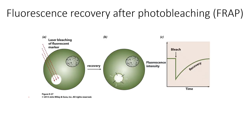The fluorescence technique we're going to discuss first is called fluorescence recovery after photobleaching, or FRAP. During FRAP, we start with a cell that has been labeled with a green fluorescent marker, as you can see in this picture. When we come in using a laser, we bleach out some of this fluorescent marker and make a bleach spot that you can see here in sort of beige or background color.